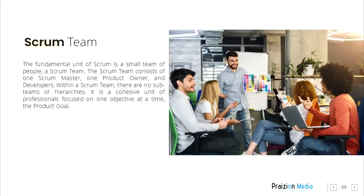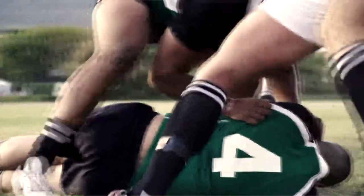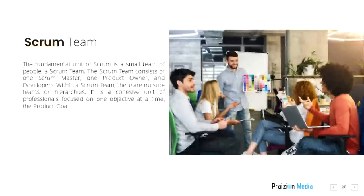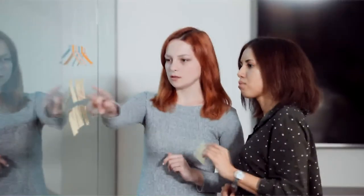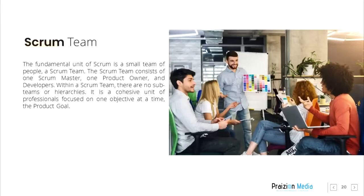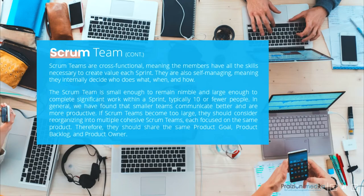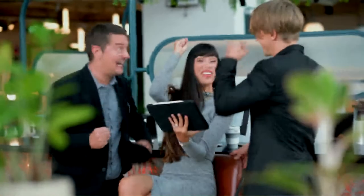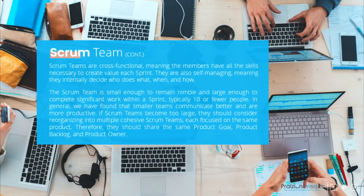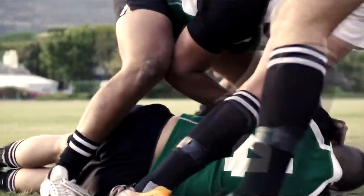Scrum Team. The fundamental unit of Scrum is a small team of people, a Scrum Team. The Scrum Team consists of one Scrum Master, one Product Owner, and developers. Within a Scrum Team, there are no sub-teams or hierarchies. It is a cohesive unit of professionals focused on one objective at a time, the product goal. Scrum Teams are cross-functional, meaning the members have all the skills necessary to create value each Sprint. They are also self-managing, meaning they internally decide who does what, when, and how. The Scrum Team is small enough to remain nimble and large enough to complete significant work within a Sprint, typically 10 or fewer people.